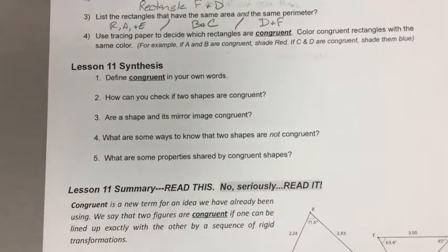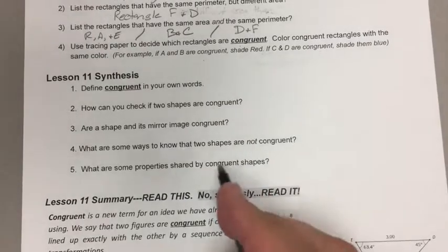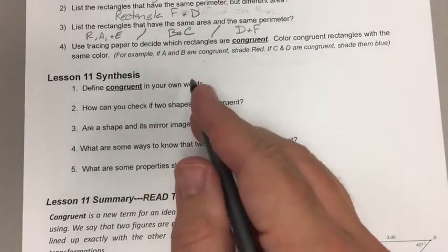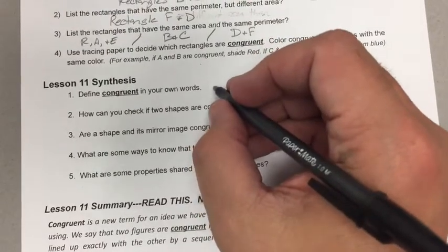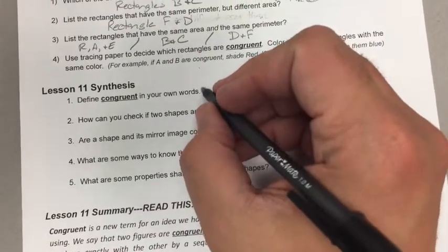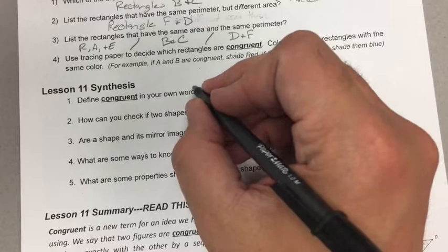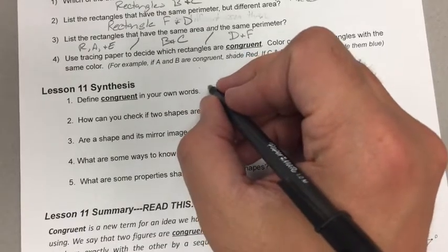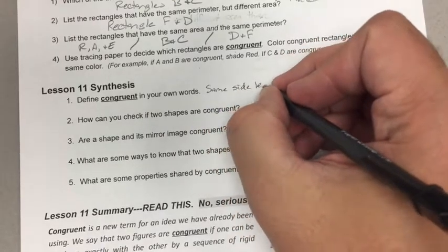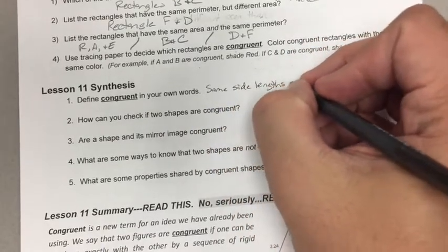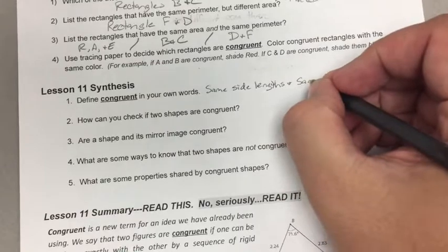Alright folks, here we are in the lesson synthesis and it says define congruent in your own words. You may have had something different than me, but some important things that you should have said to define congruent in your own words is same side lengths and same angle measures.